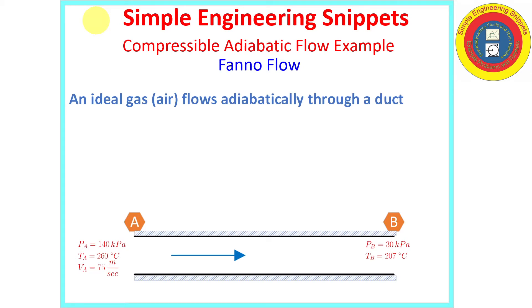Welcome to another simple engineering snippet. In this instructional video we work a compressible adiabatic flow example. This type of flow is also referred to as Fanno flow. We will be treating air as an ideal gas as it flows through an insulated duct and look to determine the velocity at the downstream end and the change in entropy through the flow field. I hope you find it useful.